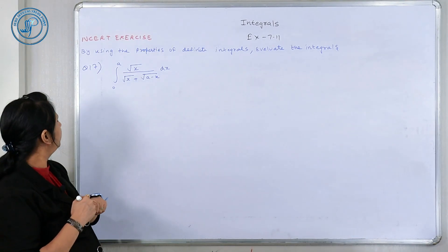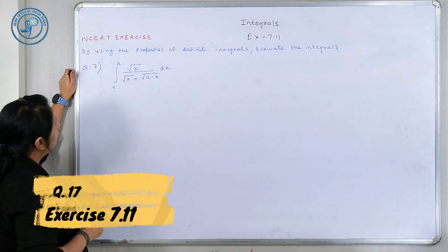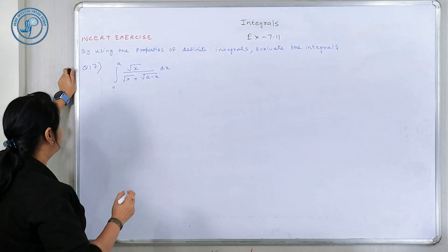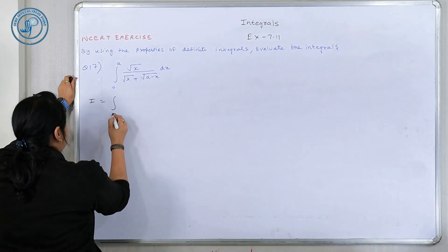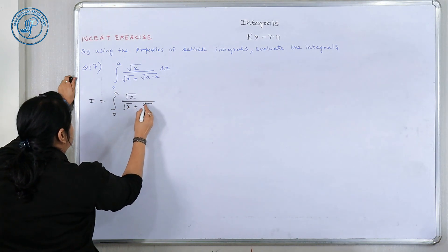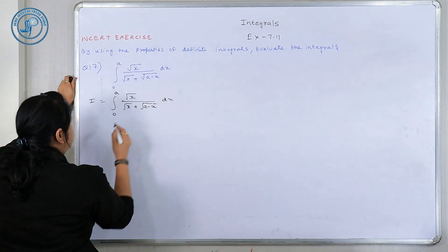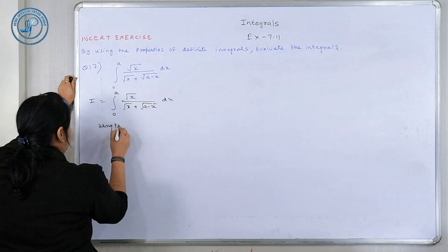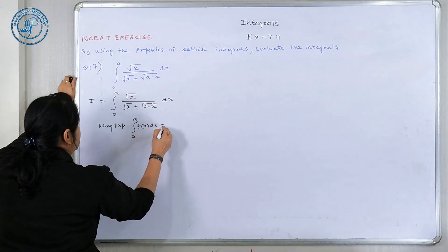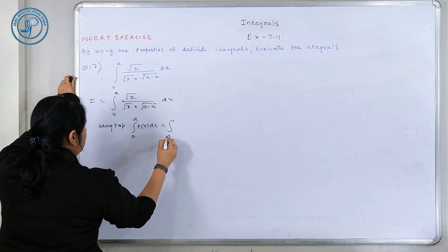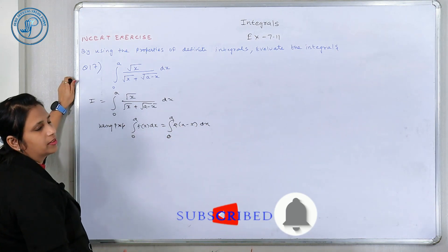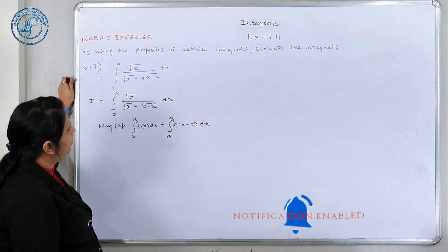Start karte hai, question number 17. हमें इसको evaluate करना है using the property of definite integral. मेरे पास I है: 0 to A, root X upon (root X plus root A minus X) DX. Using property — कौन सी property यूज़ कर रहे हैं? 0 to A, F(X) DX = 0 to A, F(A minus X) DX. 90% यह property यूज़ हो जाती है definite integral में.